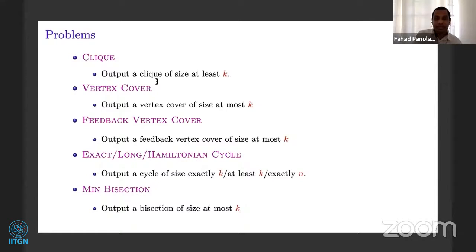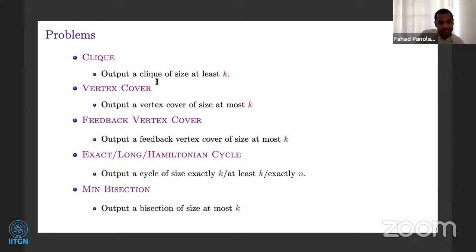The other problem we will be considering is vertex cover — you all know that: a set of at most K vertices that covers all the edges. The third problem is feedback vertex set: the set of vertices that hits all the cycles in the graph. In the feedback vertex set problem, we want a feedback vertex set of size at most K. And then there is a variant of the cycle problem — one is called exact cycle, where the input is a graph G and an integer K.